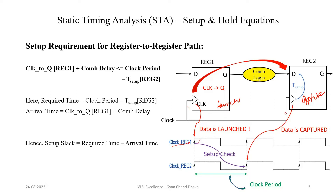The setup requirement is that the clock-to-Q delay of the launch flip-flop plus the combinational delay should be less than clock period minus t_setup. When the data is launched at a clock edge, the data will take some time — which is clock-to-Q delay plus combinational delay — and this total delay should be less than T minus t_setup.